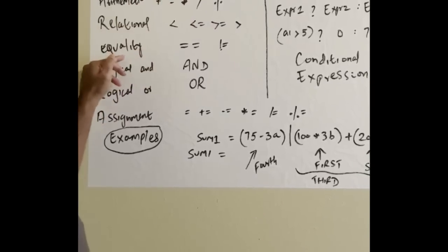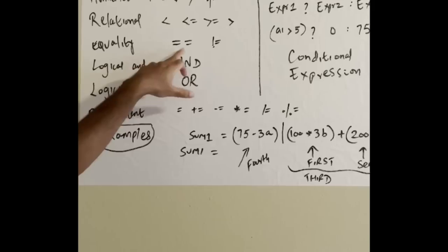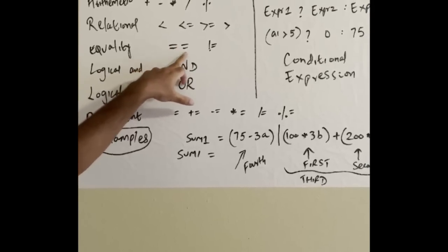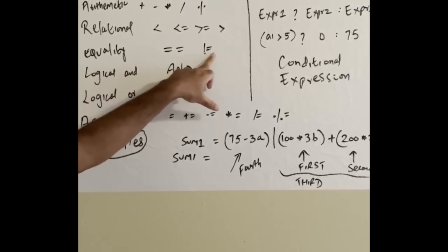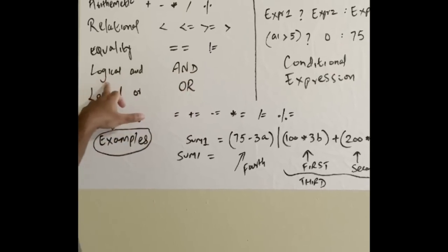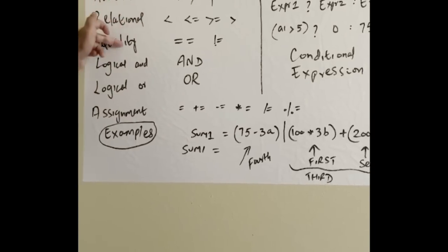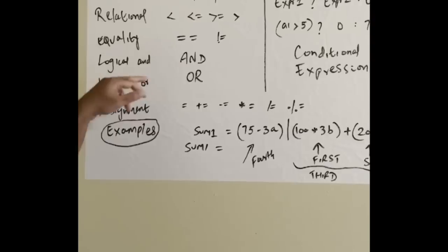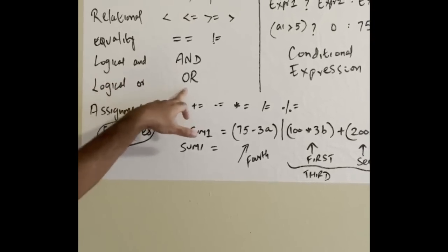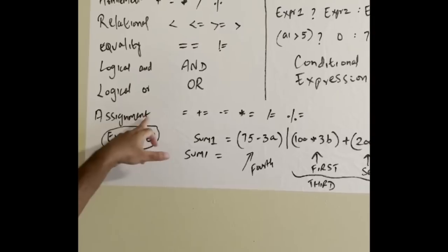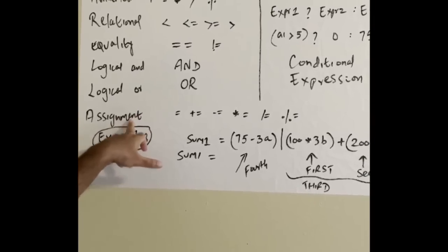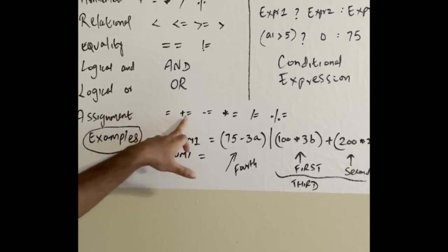Fourth order is equality operators: if a equals b we put two equal signs, and not equal for inequality. Fifth is logical AND operation, then sixth is logical OR.